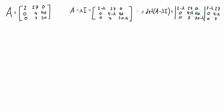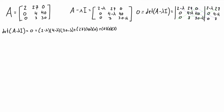We want to set this equal to zero and look for the roots. If we write out the sums of the products of the blue lines and then subtract the products of the elements on the green lines, we get this big long expression. Fortunately, when we have zeros in the matrix, a lot of these terms end up going to zero — this whole term is zero, this whole term is zero, this whole term is zero, and this whole term is zero.